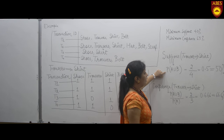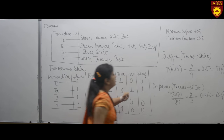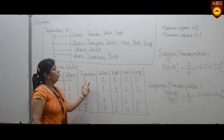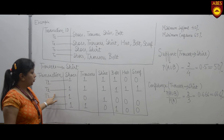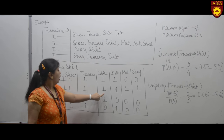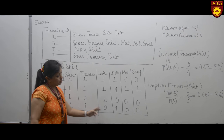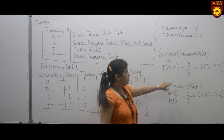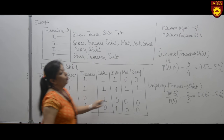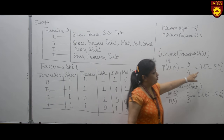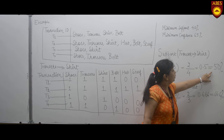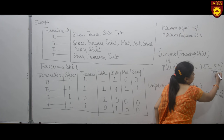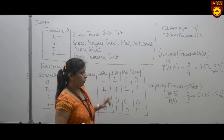Now we calculate support for the pair trouser and shirt. Support is given as the probability of A union B. We check in which transactions both trouser and shirt have a value of 1. In T1 and T2 both are 1, but in T3 and T4 either trouser or shirt is 0. So A union B equals 2, and with 4 total transactions, support = 2/4 = 0.5, or 50%. Since 50% is greater than the minimum threshold of 40%, this passes.